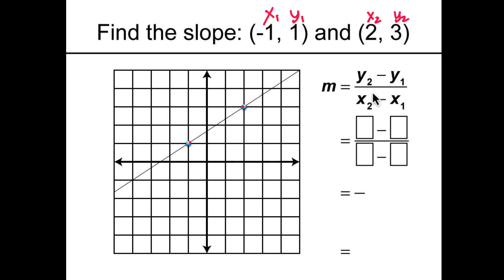Plug these coordinates into their corresponding place in the formula. Y2 goes here, y1 goes here, x2 goes here, x1 goes here, and make a note of the negative sign.